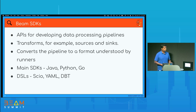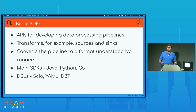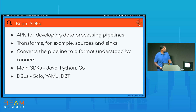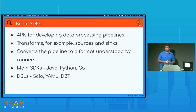Let's start with a little bit of background. Apache Beam provides a number of SDKs. SDKs offer you APIs for developing your data processing pipelines. Beam SDKs also give you a number of transforms — these include sources and sinks available in Beam — and are responsible for converting your pipeline into a format understood by Beam runners. Beam provides three main SDKs: Java, Python, and Go.